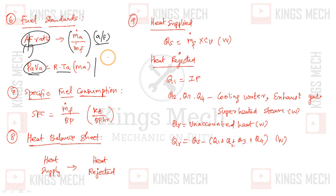Specific fuel consumption for brake power is mf divided by BP. For indicated specific fuel consumption, it's mf divided by IP. Usually, specific fuel consumption refers to mass flow rate of fuel divided by brake power - the amount of fuel needed to generate the brake power.